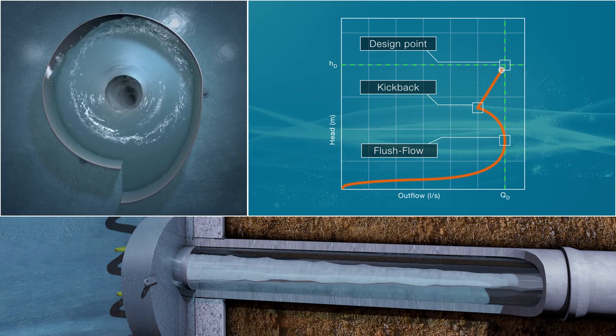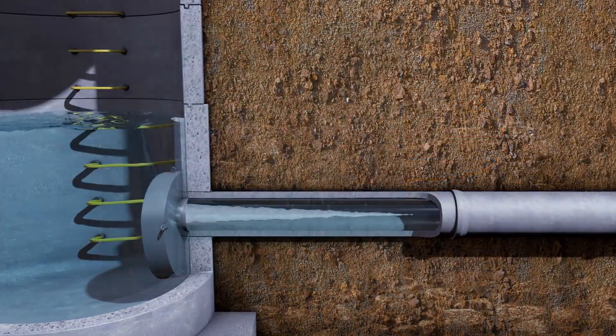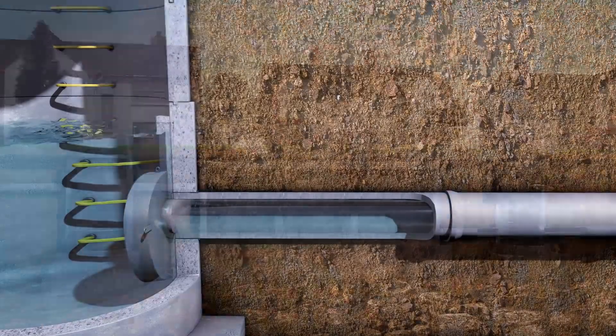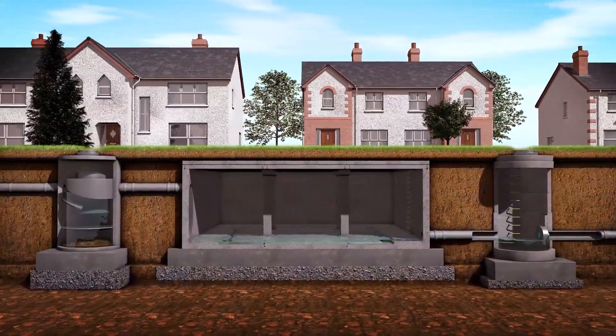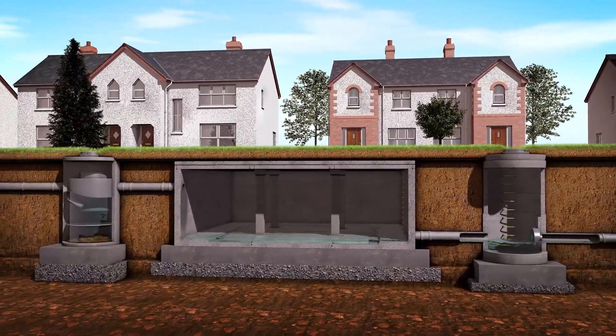When the storm subsides, the water level decreases and the vortex collapses. The stormbreak performance returns to orifice characteristic flow and the system is ready for another storm event.